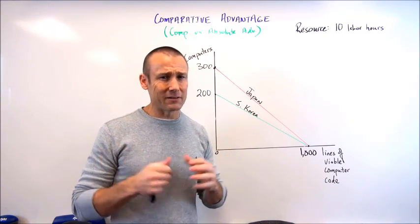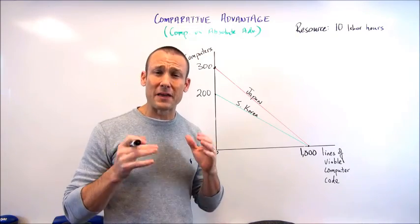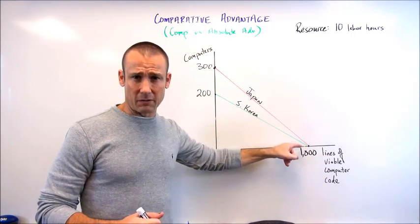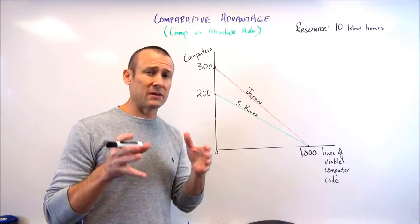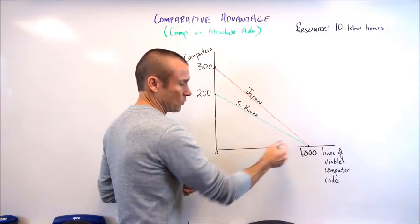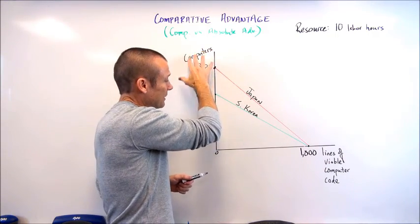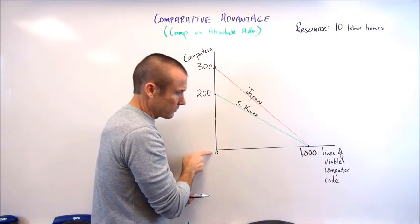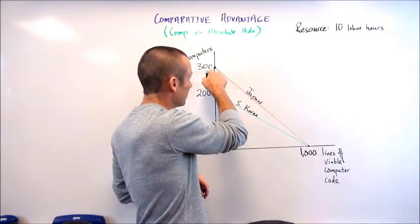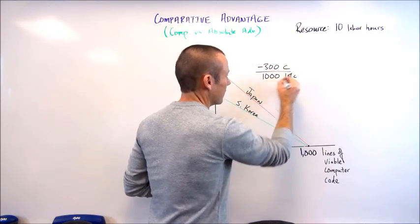When it comes to absolute advantage, that doesn't tell us who should make what when it comes to trade. For trade, we need comparative advantage. Let's find out the opportunity costs — when a country makes one good, how much of the other good are they giving up? The key is the slope of the PPFs. Since these are linear lines, we have constant slopes, and the slope of a PPF is that country's opportunity cost. For Japan — 300 computers and 1000 lines of code. If they allocate all resources to computers they make 300, but to make lines of code they give up 300 computers to get 1000 lines of code. So slope the easy way: negative 300 computers over 1000 lines of code.